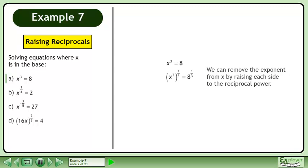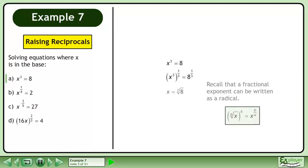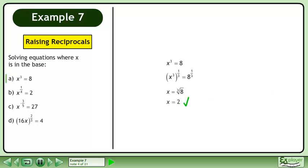We can remove the exponent from x by raising each side to the reciprocal power. Recall that a fractional exponent can be written as a radical. The cube root of 8 is 2, which is the answer.